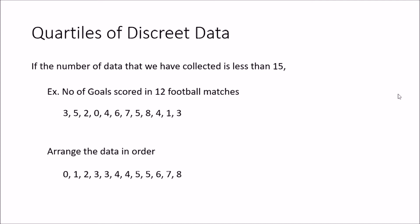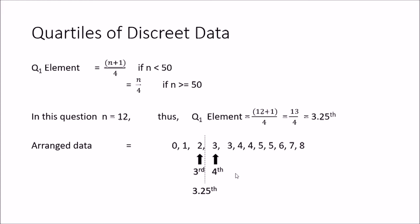First we look at discrete data. We have 12 football matches and their goals. Once you arrange the data in order, the calculations are similar to finding the median. To find Q1, we first find the Q1 element. The Q1 element is (n+1)/4 if n is less than 50, or n/4 if n is greater than or equal to 50. With n = 12, the Q1 element is (12+1)/4 = 13/4 = 3.25.